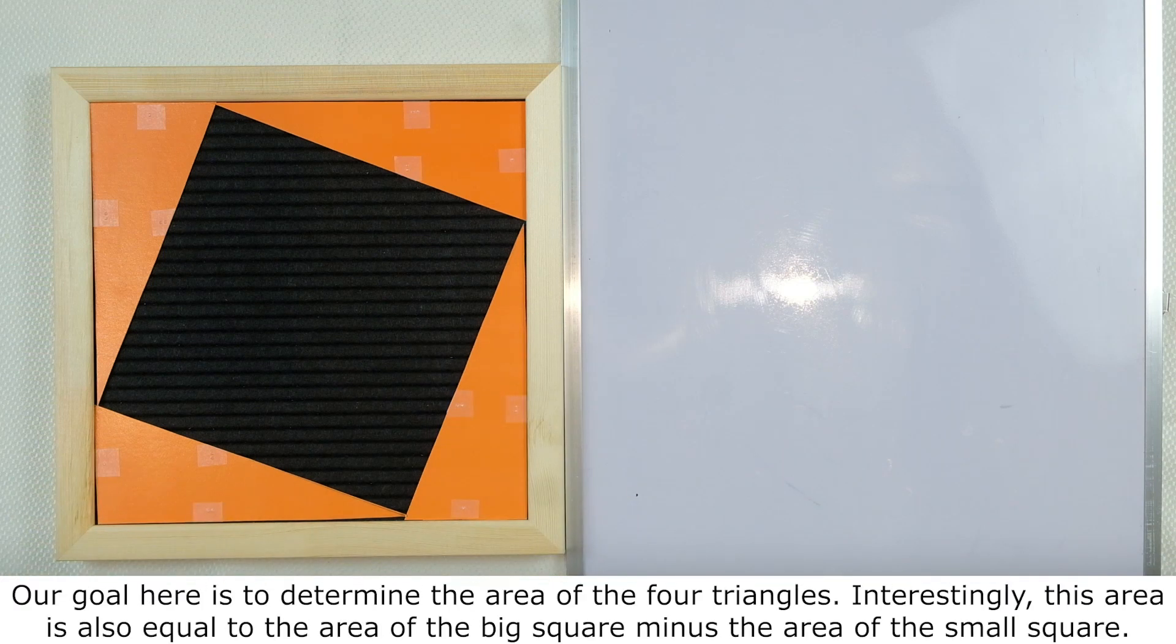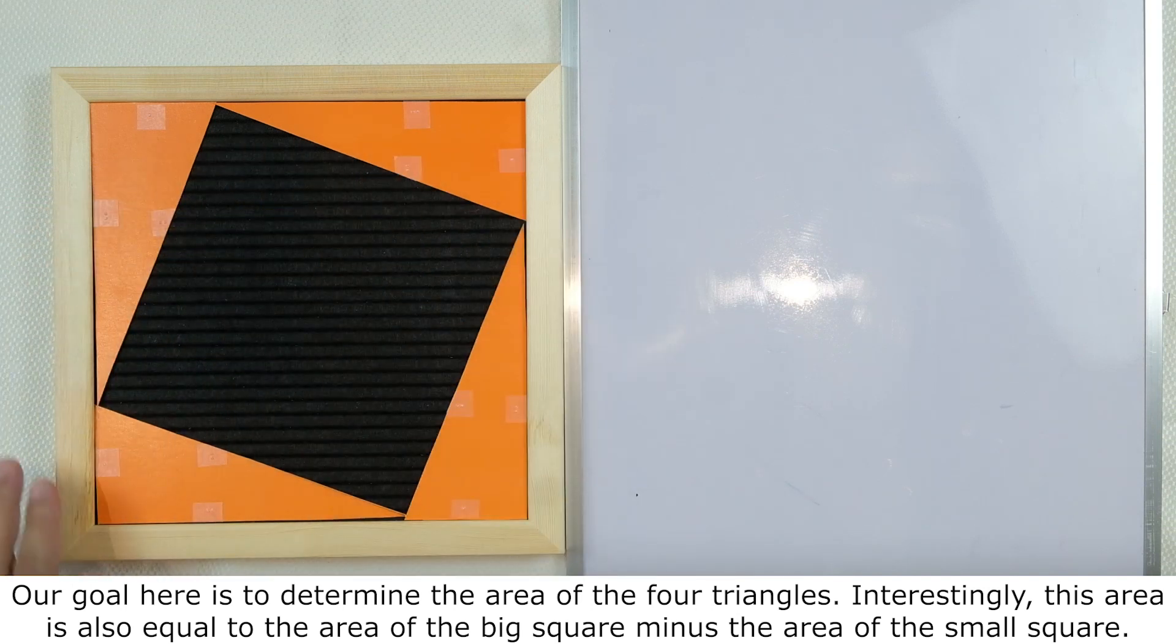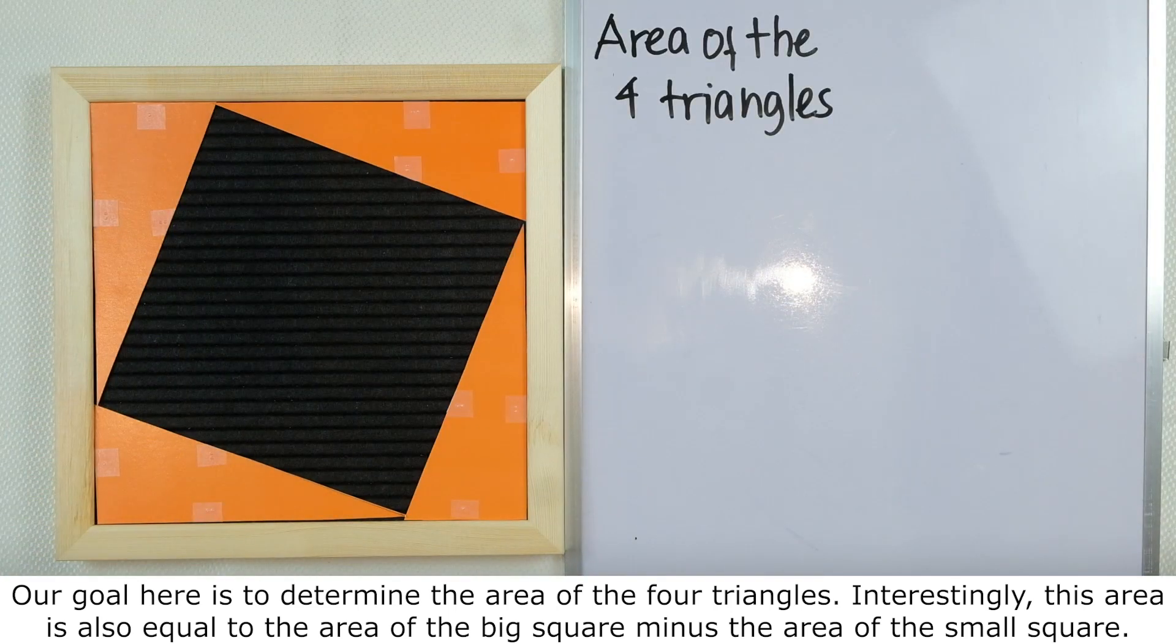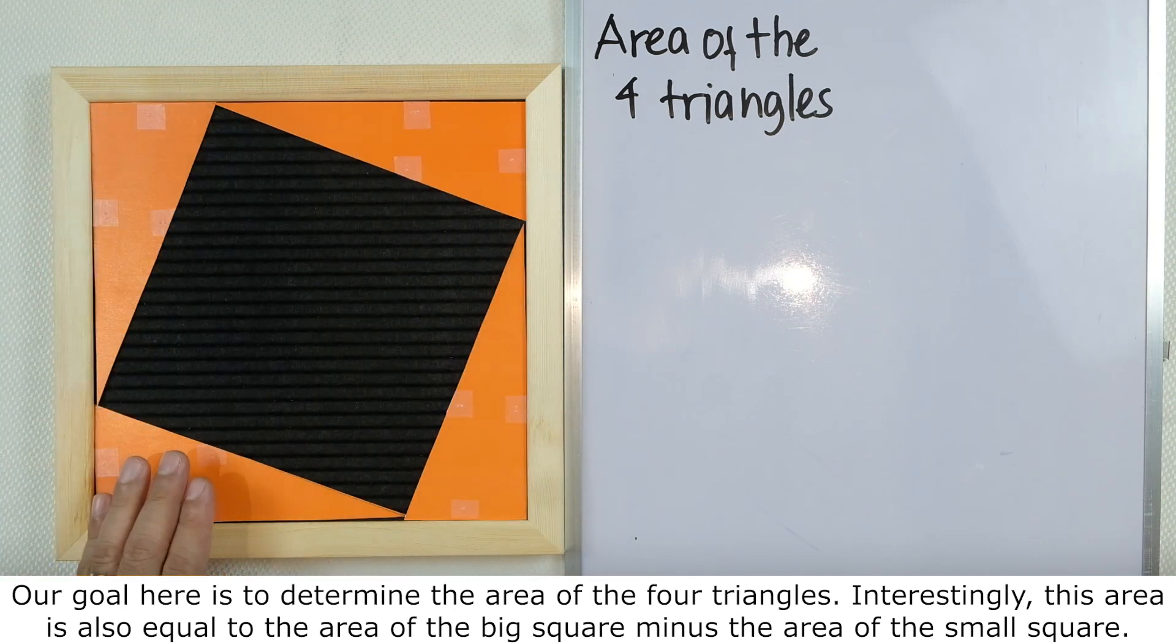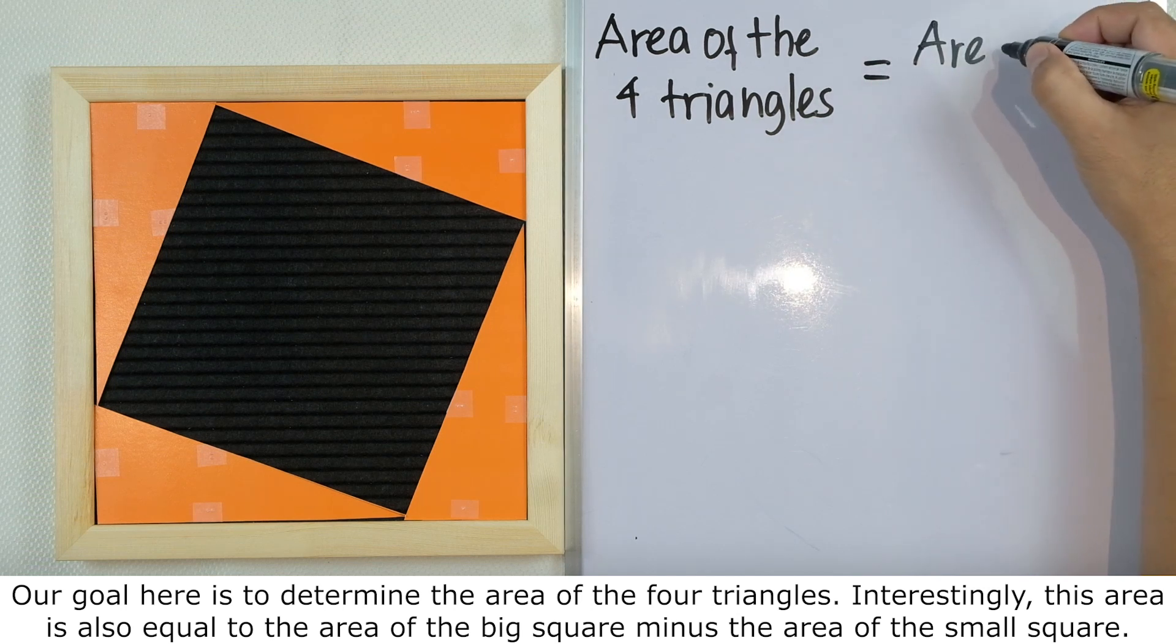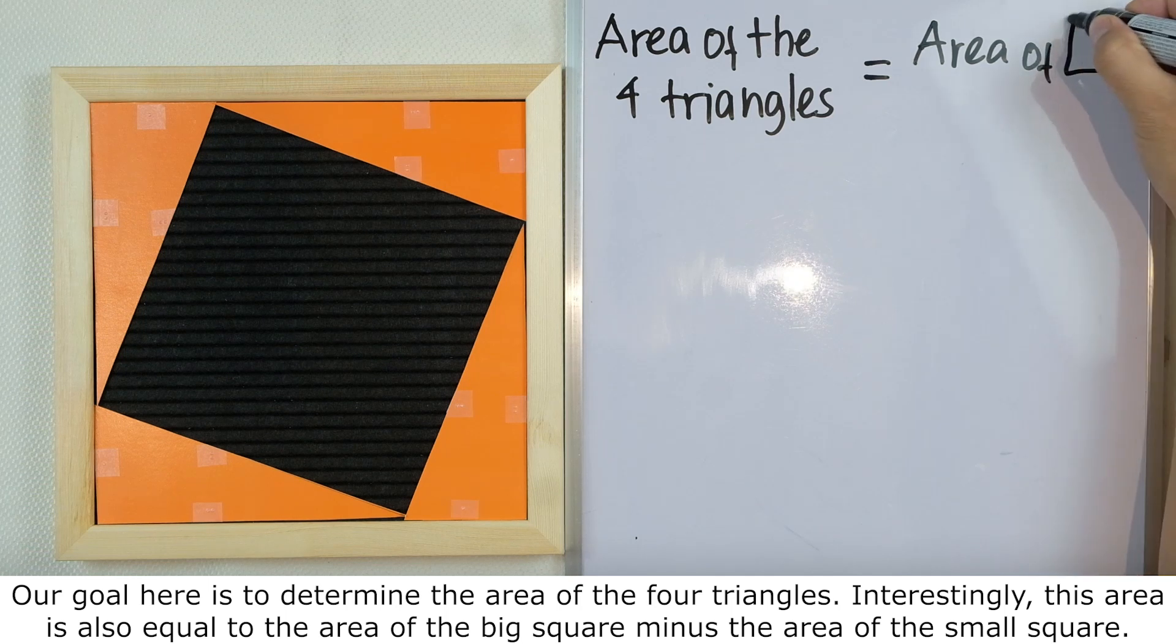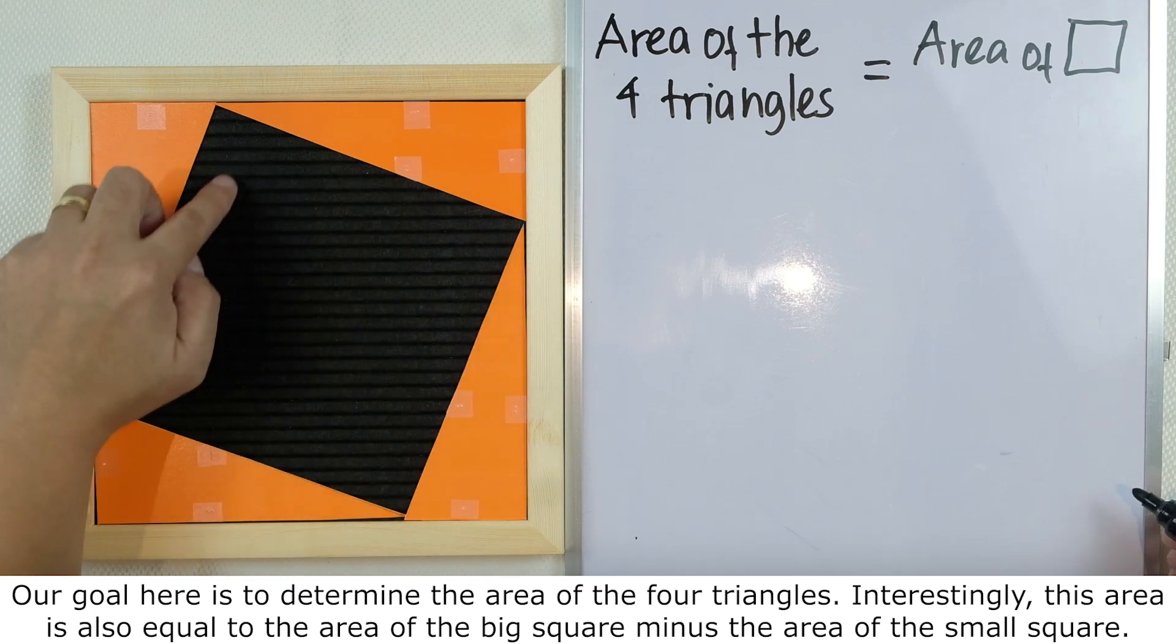Our goal here is to determine the area of the four triangles inside this big square. Interestingly, this area is also equal to the area of the big square minus the area of the small square.